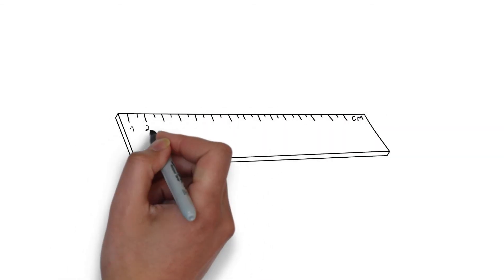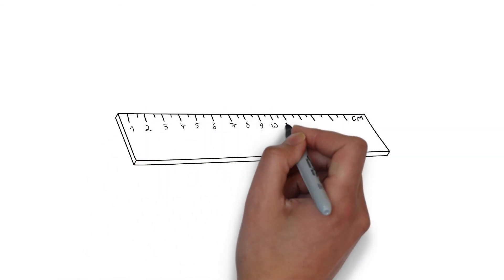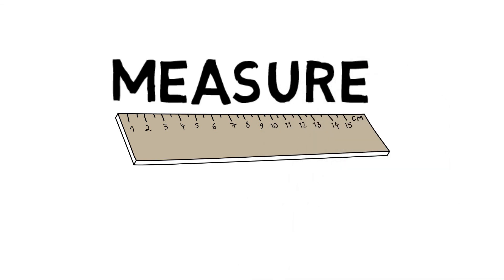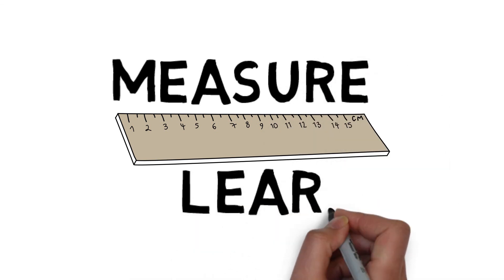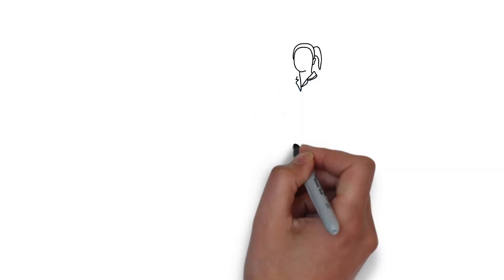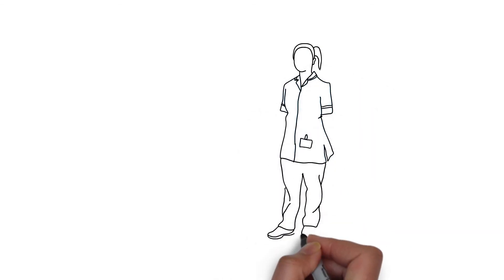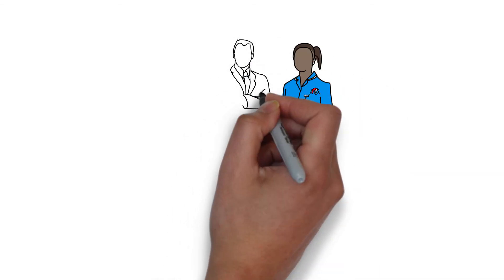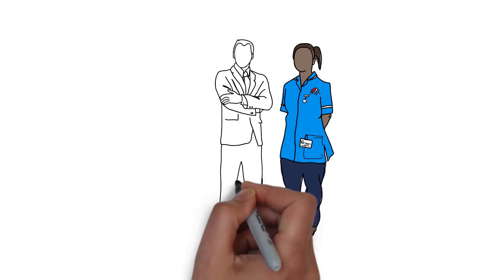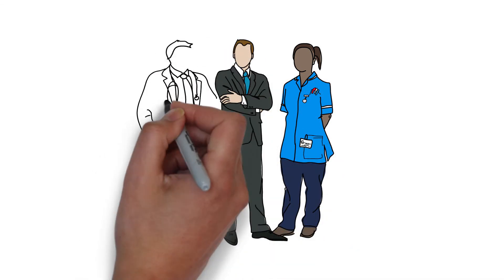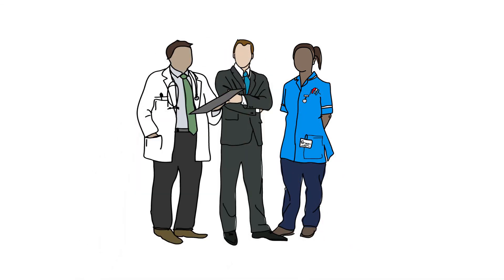As discussed in Module 1, measurement is critical to quality improvement as it enables us to learn whether the changes we are making are actually improvements. Teams that take the time early on in their improvement journey to discuss the use of measures will be more successful in understanding how the changes they are making are affecting their work.